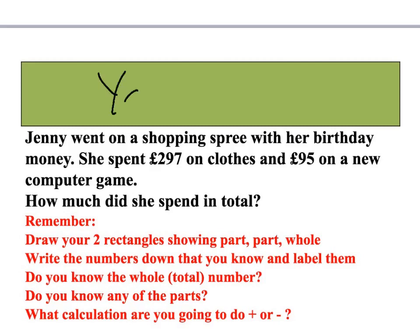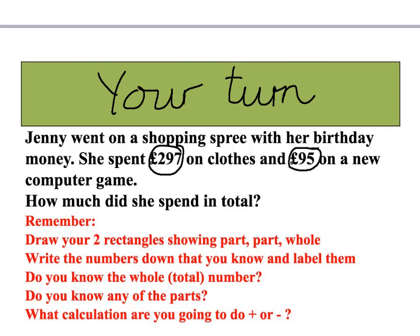Now your turn. Jenny went on a shopping spree with her birthday money. She spent £297 on clothes and £95 on a new computer game. How much did she spend in total? Remember you need to draw your two rectangles showing part, part, whole. Write the numbers down that you know and label them. Do you know the whole number already, or do you know any of the parts? What calculation are you going to do — add or take away? Press pause, draw your model, and when you're ready try the next one.